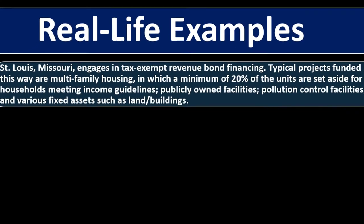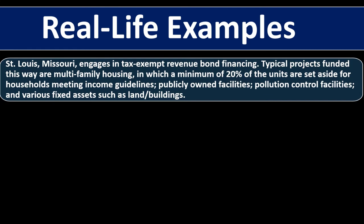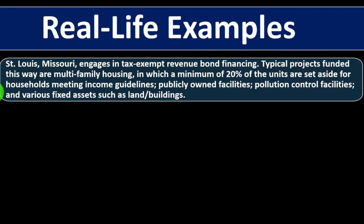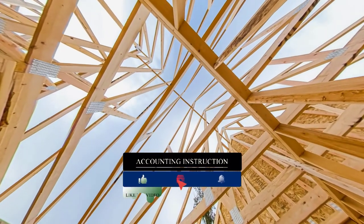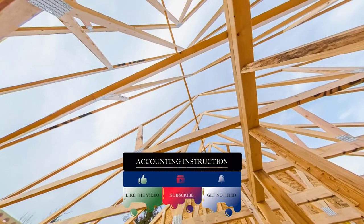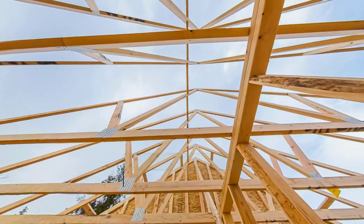As a real-life example, St. Louis, Missouri engages in tax-exempt revenue bond financing. Typical projects funded this way include multifamily housing where a minimum of 20% of units are set aside for households meeting income guidelines, publicly owned facilities, pollution control facilities, and various fixed assets such as land and buildings. These kinds of bonds are interesting to look at in your local area, though with low-income housing projects, you want to be careful about how they're structured, since if not structured well, the long-term effect can tend toward slums and declining projects.